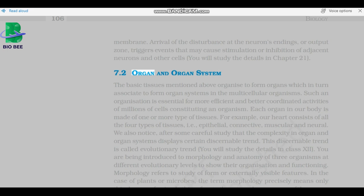The basic tissues mentioned above organize to form organs, which in turn associate to form organ systems in the multicellular organisms. Such an organization is essential for more efficient and better coordinated activities of millions of cells constituting an organism. Each organ in our body is made of one or more type of tissues. For example, our heart consists of all the four types of tissues, i.e. epithelial, connective, muscular and neural.